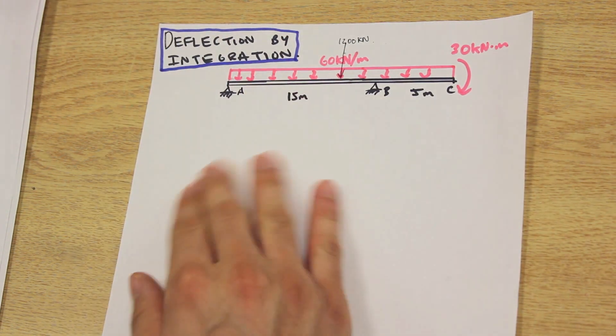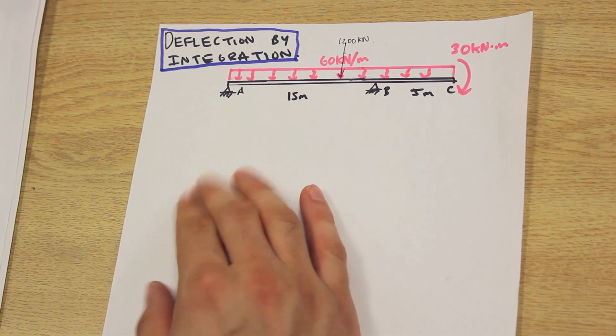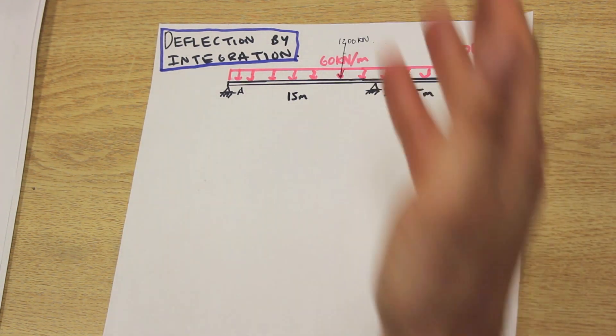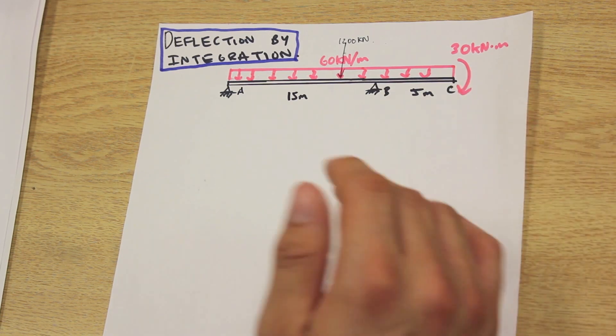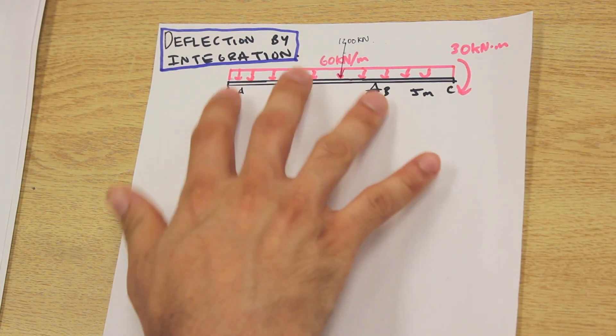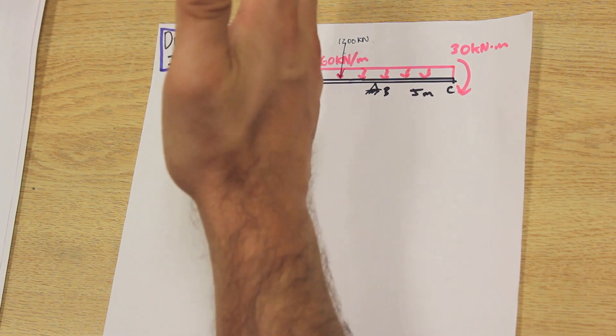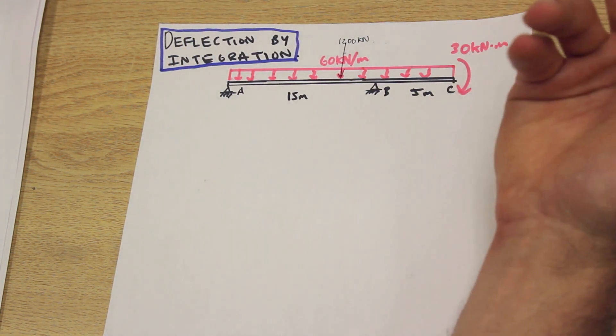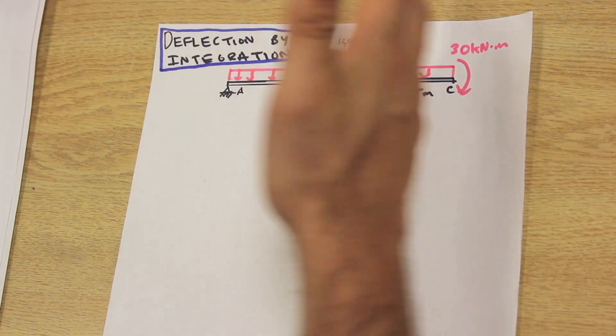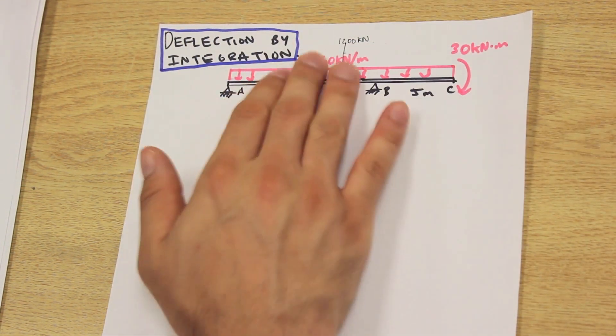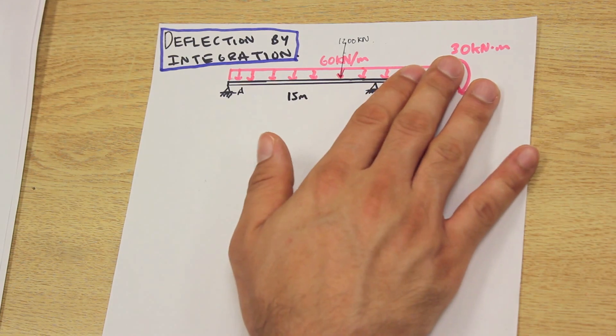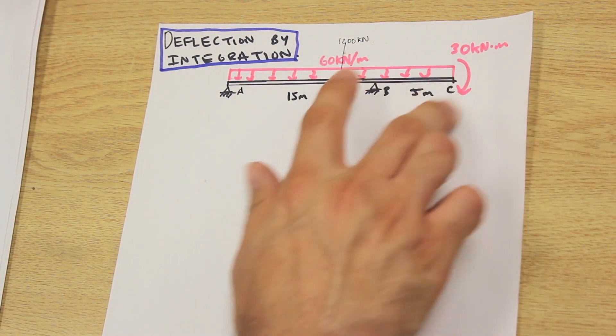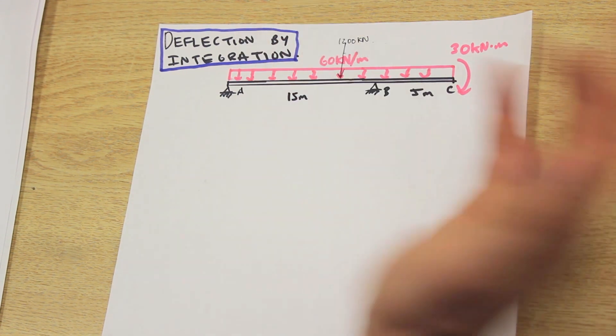When we're solving a deflection by integration question, it's very similar to solving the reactions of a beam and then cutting it for your bending moment diagram. We're going to first find the reactions, and then we're going to cut it here and here. What we're going to do is derive the equations for the different sections of the beam, because the deflection here isn't going to be the same as the deflection here because the loadings are different. We need to take into consideration both sections of the beam.